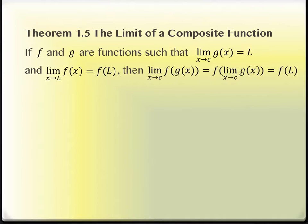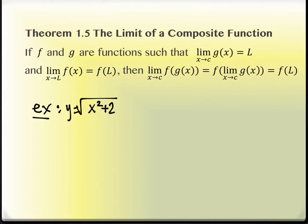Composite functions are functions inside of functions — embedded functions. For example, the square root of (x squared plus 2) is a composite: x squared plus 2 is one function inside the square root. The limit theorem tells us the same thing applies: evaluate the inside function, find its limit, and then plug that value into the outer function. It continues to work as you would hope.